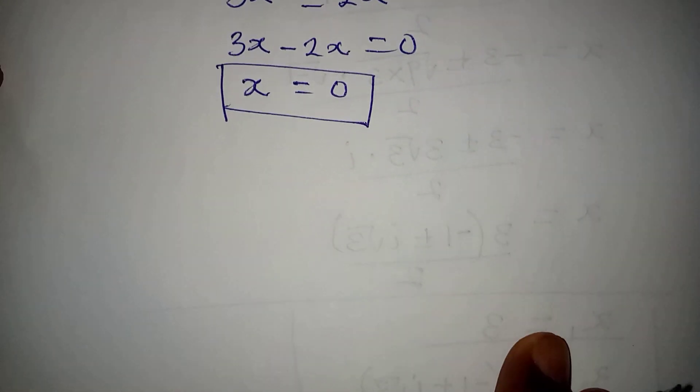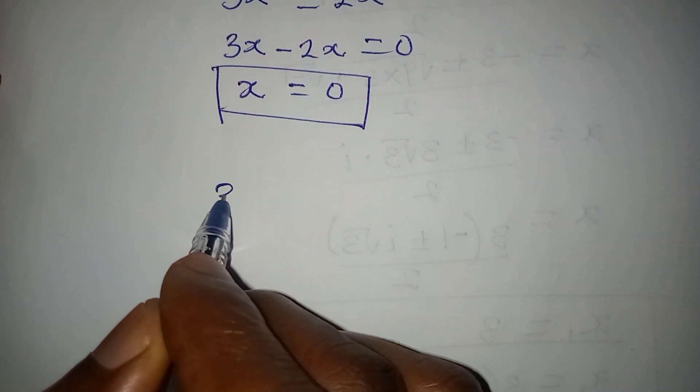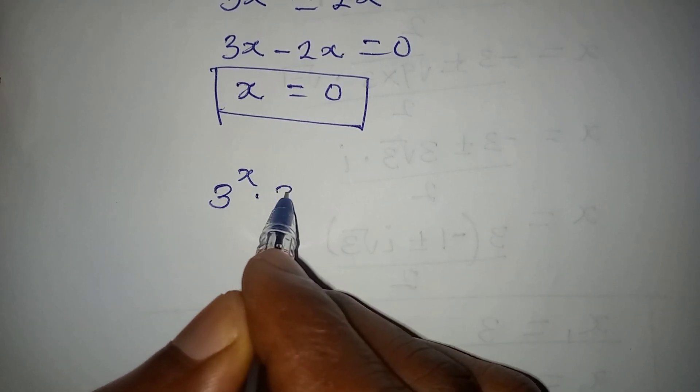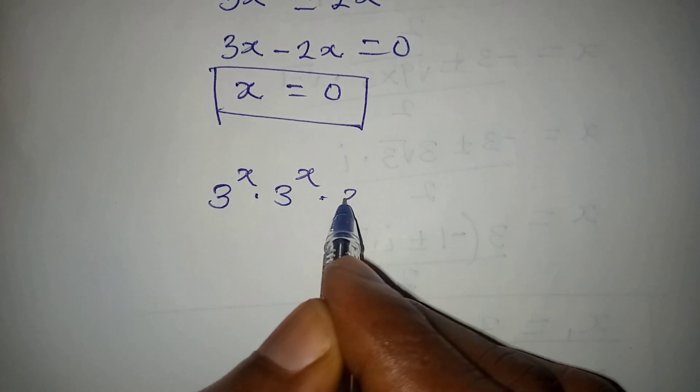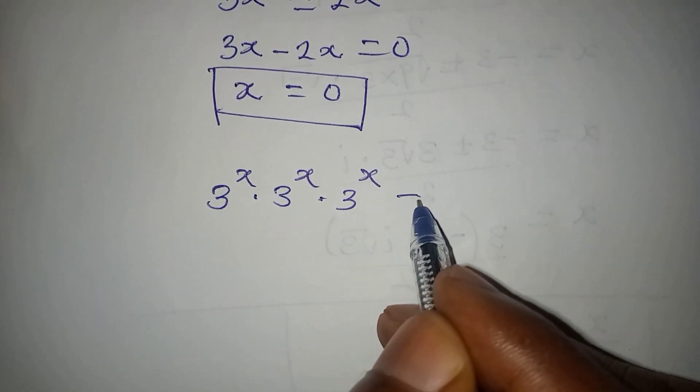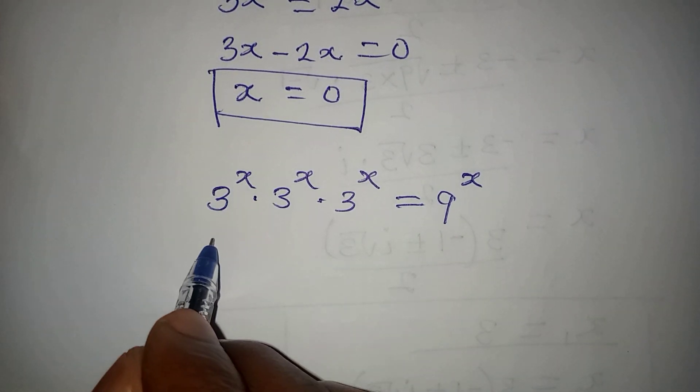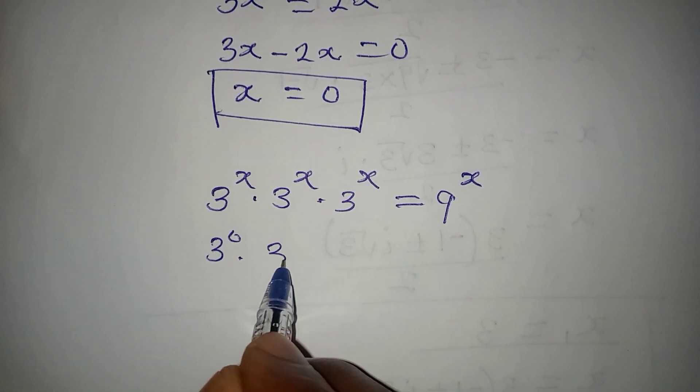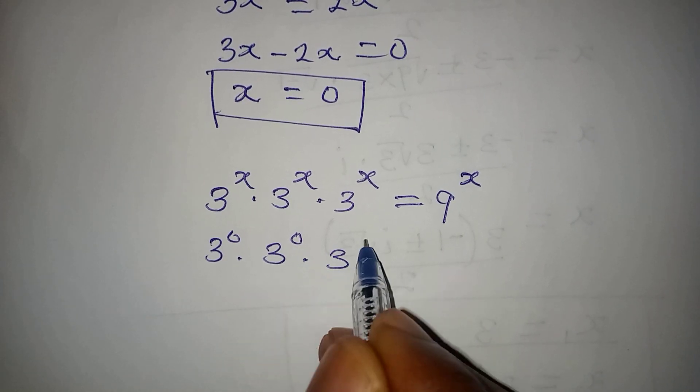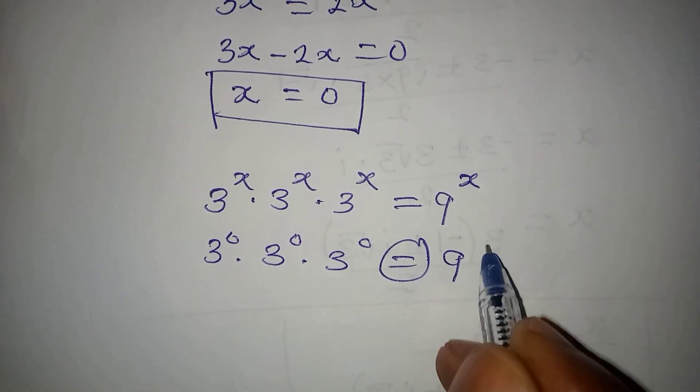Looking at the equation again: 3 to the power of x times 3 to the power of x times 3 to the power of x equals 9 to the power of x. If we put 0 here, will 3 to the power of 0 times 3 to the power of 0 equal 9 to the power of 0?